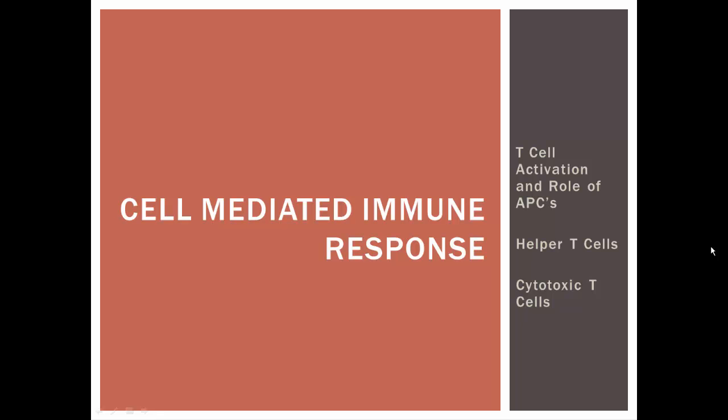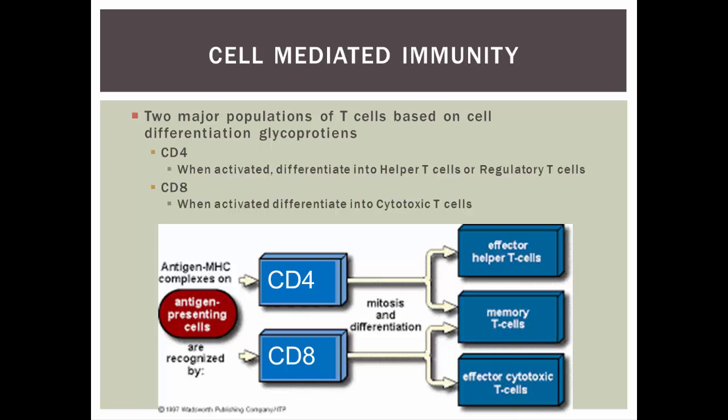Now we're ready to look at cell-mediated immune response. This is the other branch of the adaptive immune system. We'll look at T-cells, and just like we looked at B-cell activation, we have to see how T-cells are activated and the role that antigen-presenting cells have in that activation. Then we'll also look at two types of T-cells primarily — helper T-cells and cytotoxic T-cells. In cell-mediated immunity, there are basically two populations of T-cells based on glycoproteins found on the cell membrane.